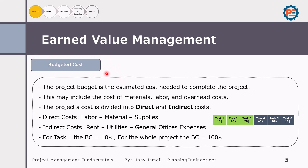We'll start with the first term: budget cost. Budget cost represents the estimated cost needed to complete the project. This may include the cost of material, labor, and overhead costs — both direct costs such as labor, material, and supplies, and indirect costs such as rent and utilities. For example, this project includes six tasks, each with a budget cost. The total project budget cost is 100, which equals 10 plus 10 plus 20 plus 40 plus 10 plus 10.